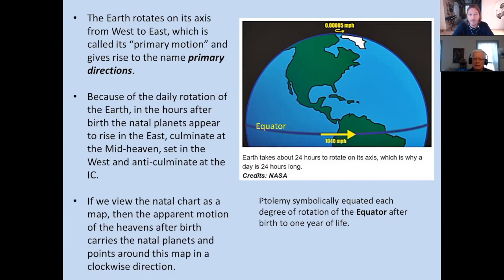Ptolemy made the assumption or equation that each degree of motion along the equator should be symbolically equivalent to one year in the life of the person. I'm not 100% clear why he did that, but I have a theory about his reasoning, and there may be some experts who really know why he thought it.